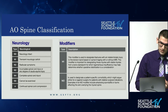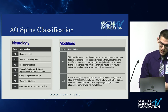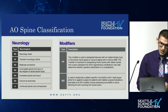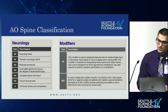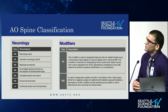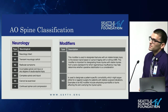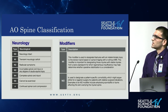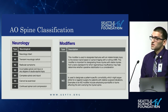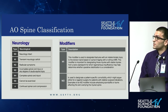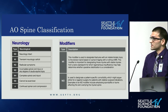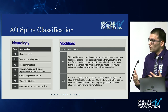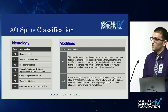For the other components — neurology and the modifiers — you check if the patient is neurologically intact. If so, you give the patient an N0. If there's complete spinal cord injury, that would be N4. For modifier M1, if it's hard to tell whether the posterior ligamentous complex is disrupted, you assign M1. If patients have other factors preventing surgery, such as polytrauma, or comorbidities like ankylosing spondylitis or burns, you would assign M2.